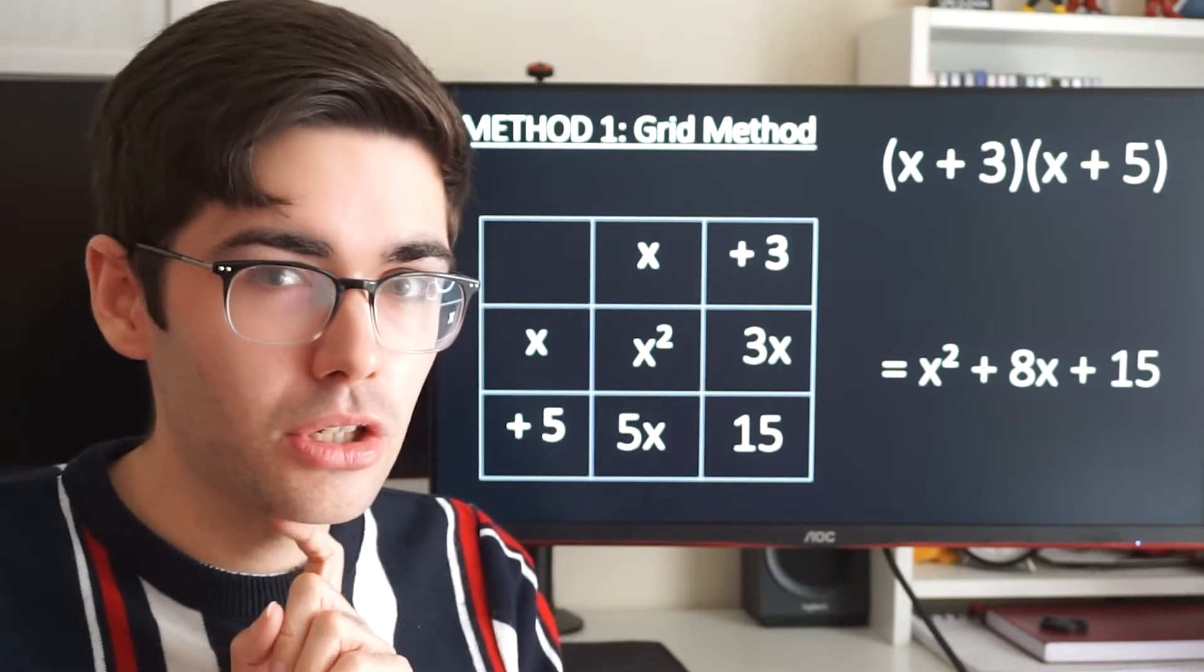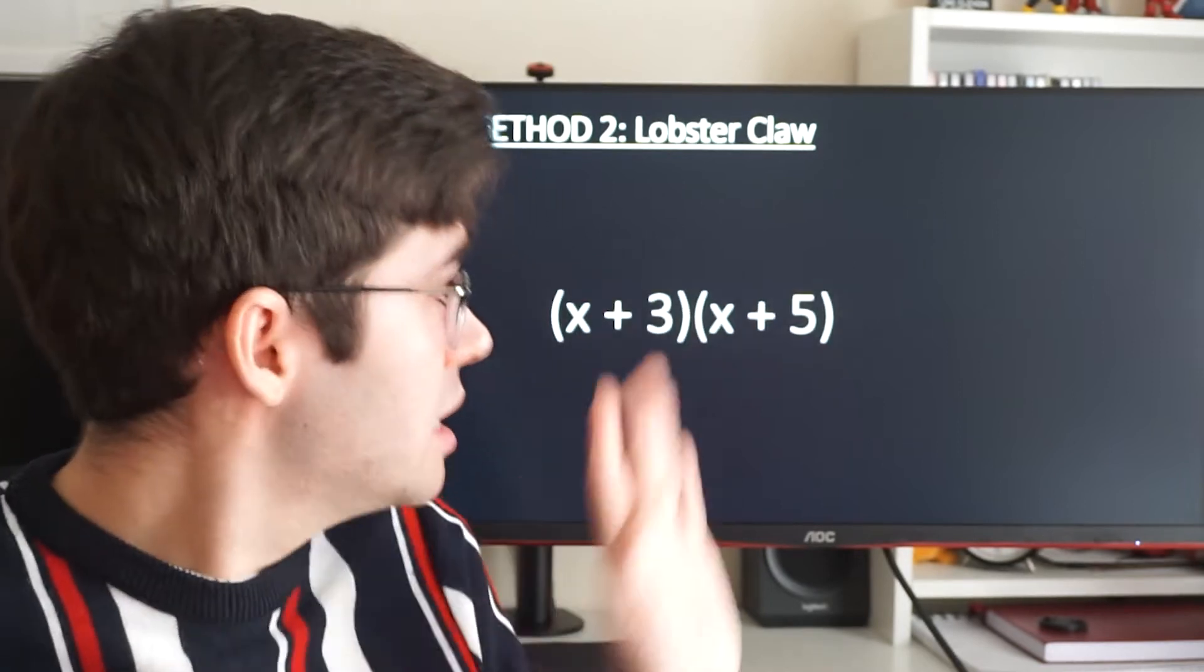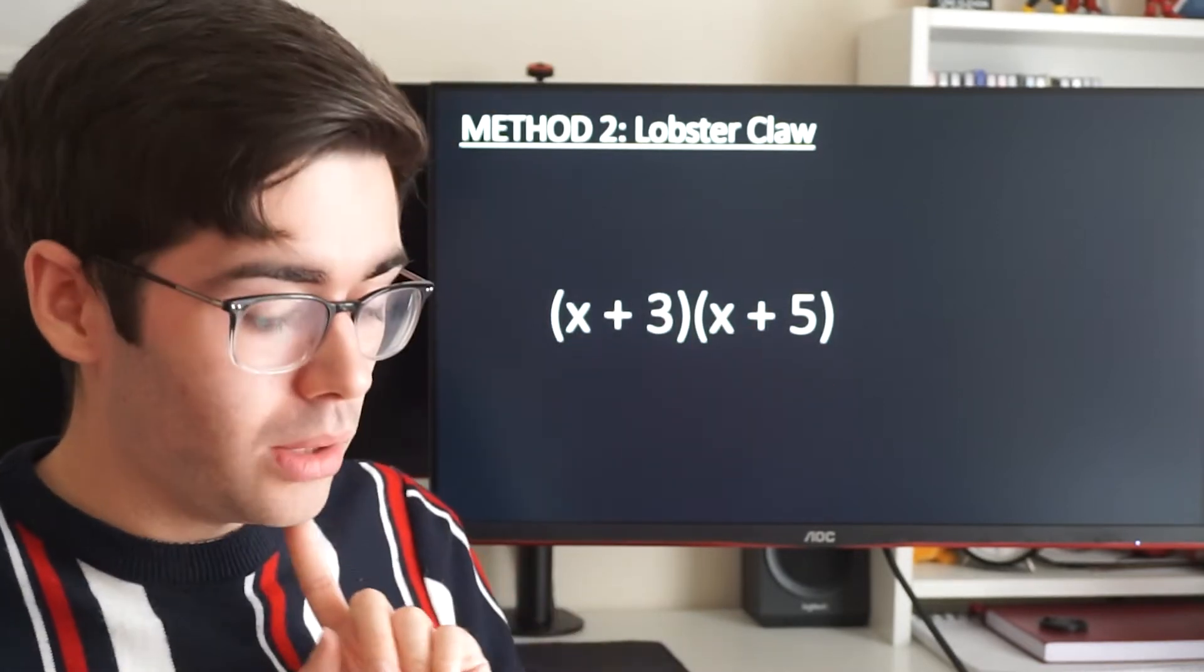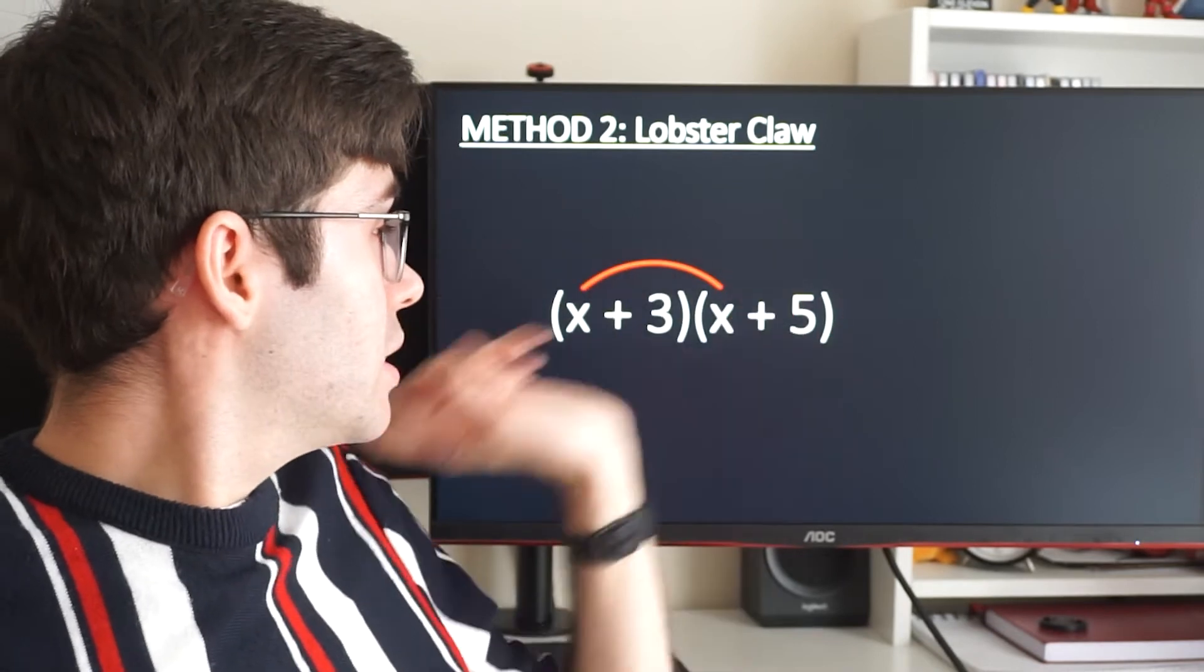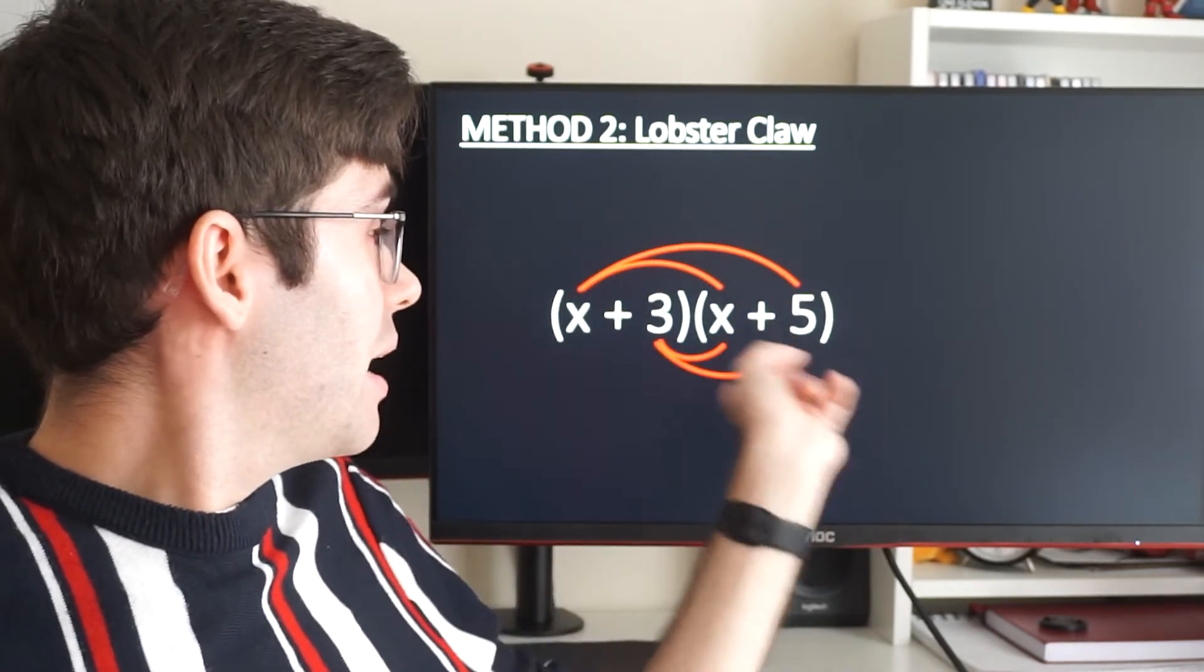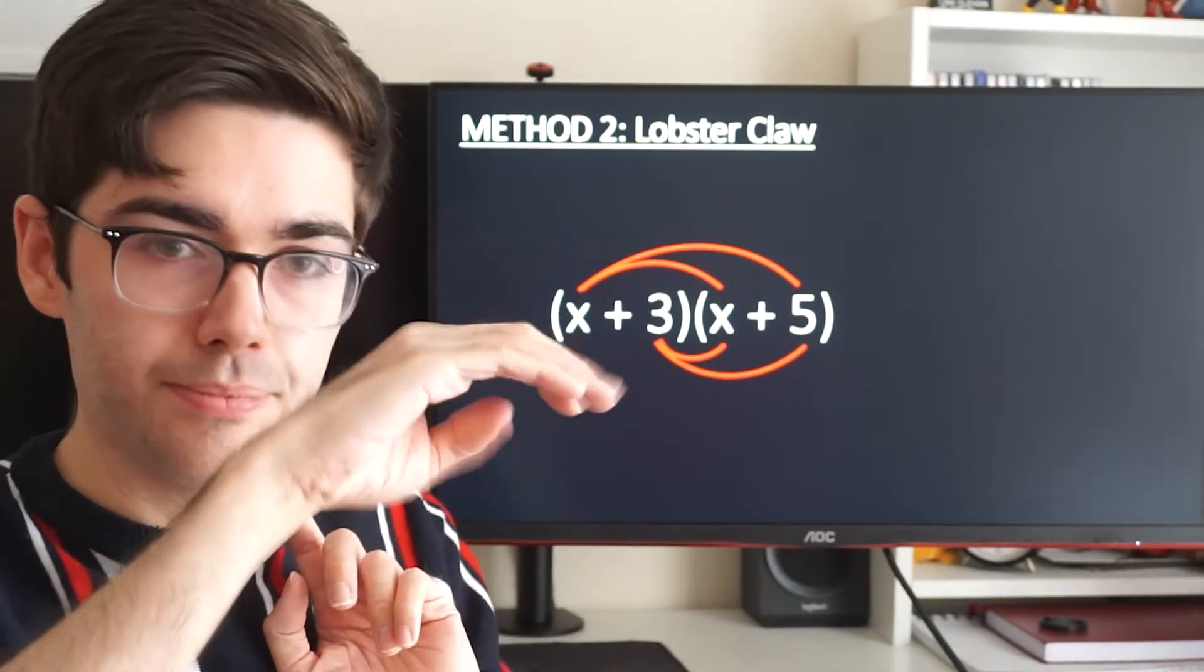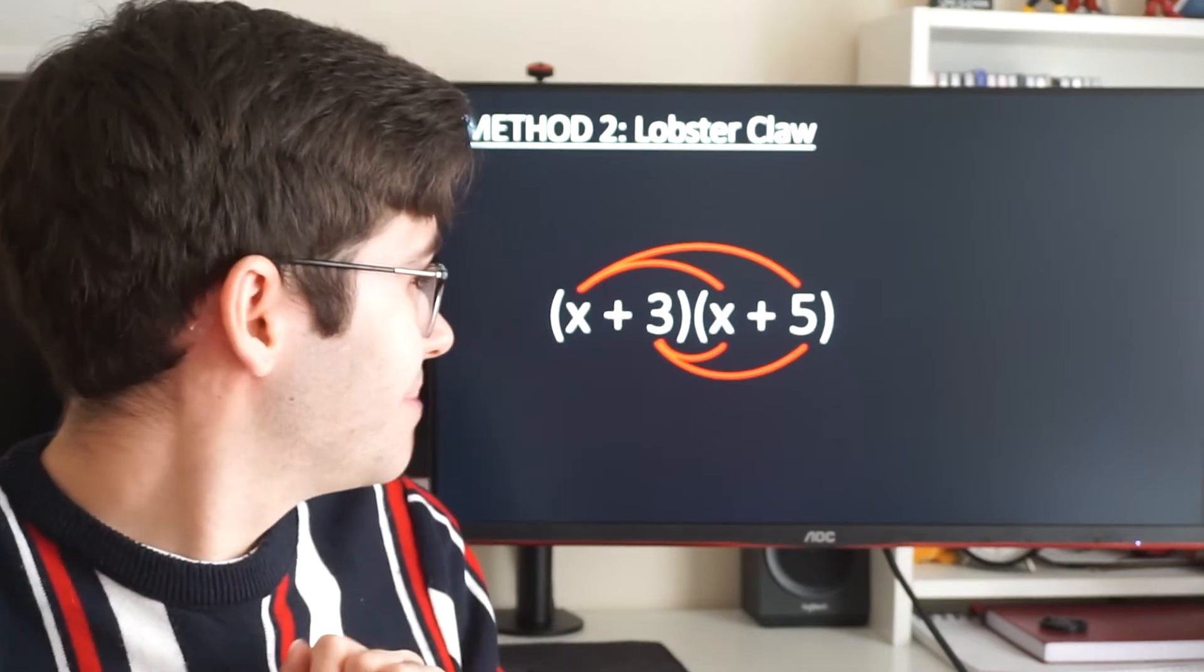Here is another method you can use if you're not vibing with the grid method. This is called the lobster claw. You might have seen this before. Same brackets, and all I'm going to do is draw a line between the x's, a line going to the 5, a little line there, and another line there. And it kind of looks like a lobster claw around the brackets, if you can see that.